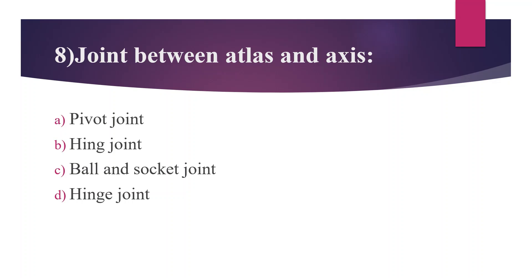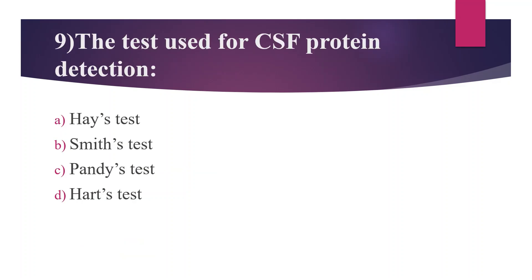Eighth Question about joint types: Option C: Ball and socket joint. Option D: Hinge joint. Answer is Option A: Pivot joint. The Atlas is the first cervical vertebra and the Axis is the second cervical vertebra — the joint between them is a pivot joint.